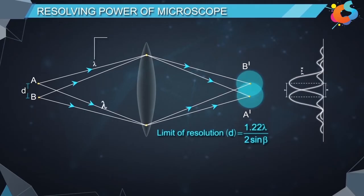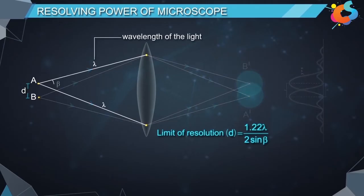Here lambda is the wavelength of the light and beta is the semi-vertical angle of the cone in which rays of light from an object enter the objective of the microscope.